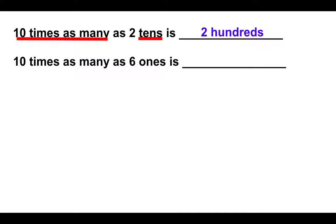How about this one? Ten times as many as six ones is what? Well, again, you should have thought ten times as many means move one place value over, and from the ones place, that brings us to having six tens.